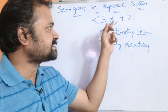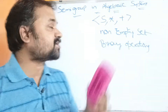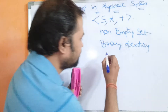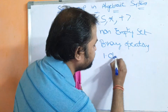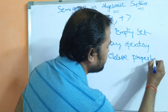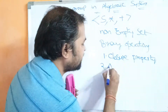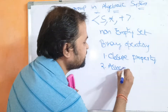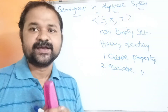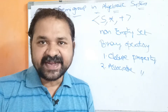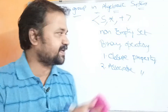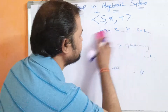An algebraic system S, star, plus is called a semi-group if it satisfies two properties. The first property is closure property, and the second property is associative property. So an algebraic system is called a semi-group if it satisfies these two properties: closure property and associative property.